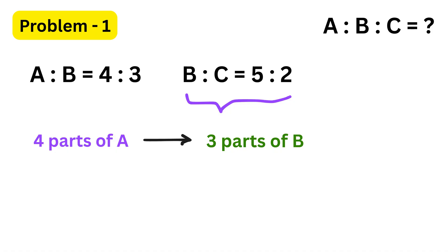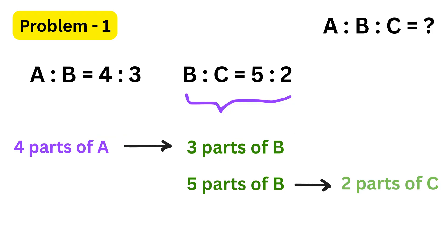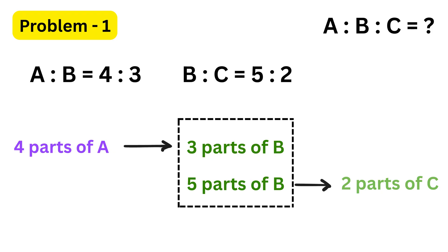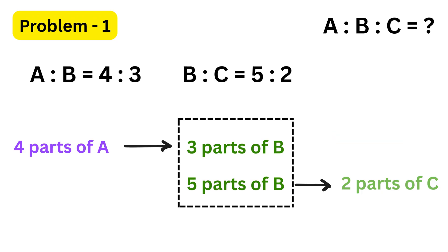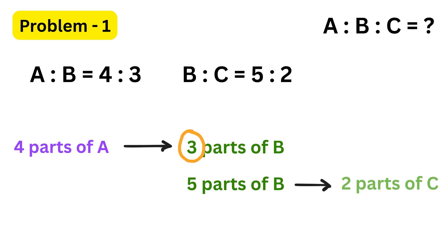The second ratio, B to C equals five to two, tells us that for every five parts of B, there are two parts of C. Notice something very important — the letter B appears in both ratios. This means B is the common link that connects the two ratios. To combine both ratios into one single ratio of A to B to C, we must make sure that the number of B parts in both ratios is exactly the same.